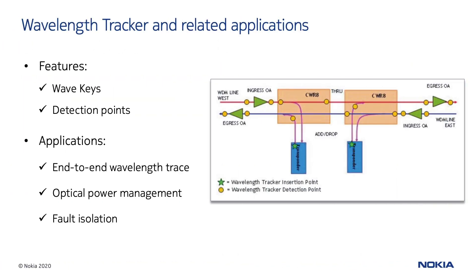The 1830 PSS portfolio has been designed with the unique capability to deeply trace every wavelength passing through the 1830 domain. The feature works by encoding a univocal identifier consisting of a pair of numbers, known as wave keys, into the service wavelength at the transponder's transmitter. Then, at various detection points in the network, the Wavelength Tracker detects the wave keys assigned to a specific service wavelength.